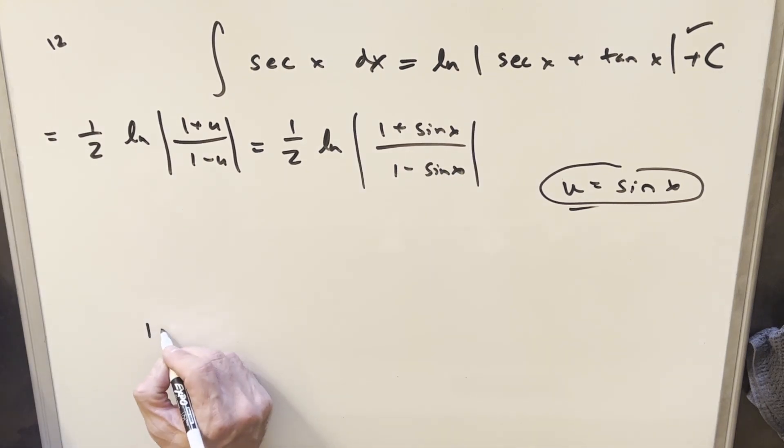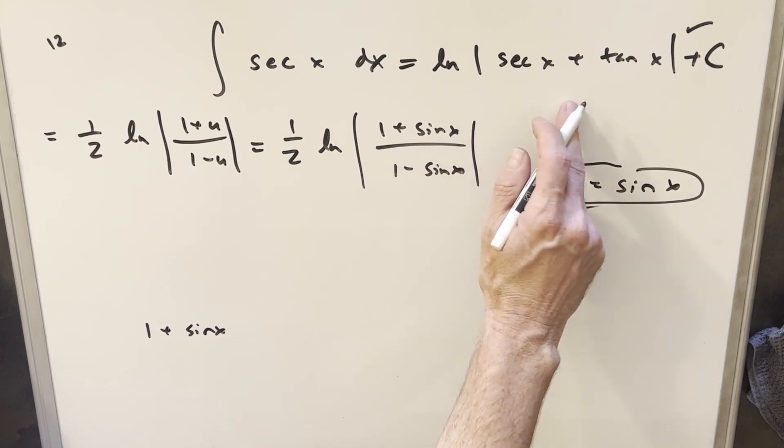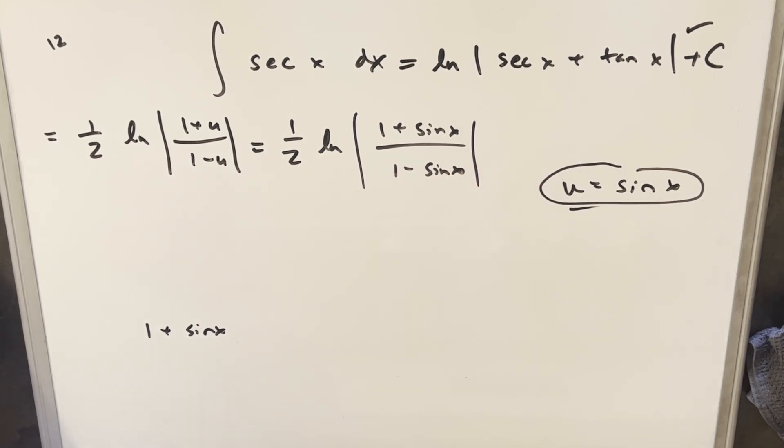What I want to do is get this back into this form. It looks a little different here even though it's actually the same thing. What I'm gonna do is multiply by the conjugate here in the denominator. Well, actually in the top and bottom we're gonna multiply by the 1 plus sine x.